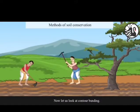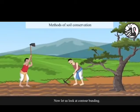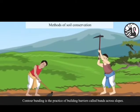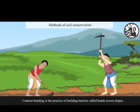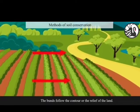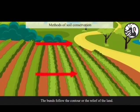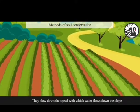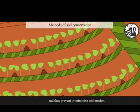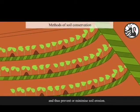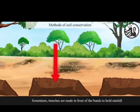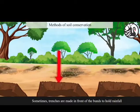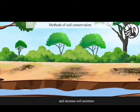Now let us look at contour bunding. Contour bunding is the practice of building barriers called bunds across slopes. The bunds follow the contour or the relief of the land. They slow down the speed with which water flows down the slope and thus prevent or minimize soil erosion. Sometimes, trenches are made in front of the bunds to hold rainfall and increase soil moisture.